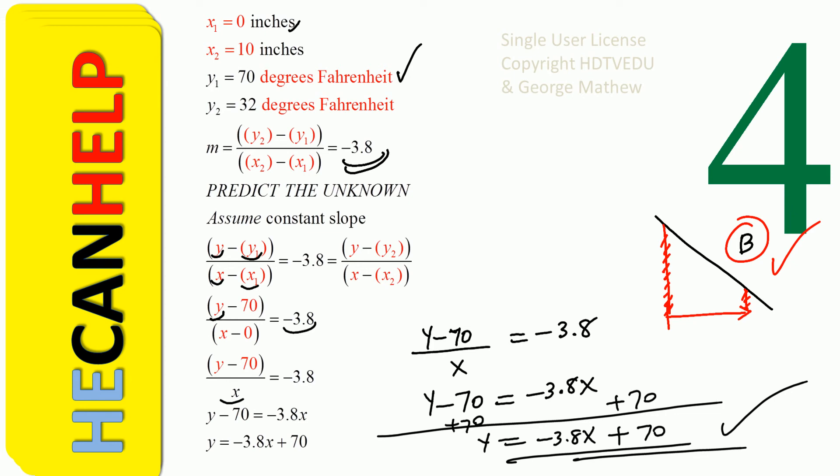We were told that the slope was a constant. So if slope is a constant, then we have y equals negative 3.8x plus 70. x stood for the inches of thickness of insulation. So now you can put any thickness into this equation and we can get the temperature at that point.